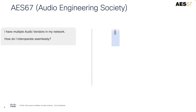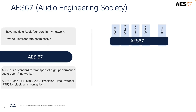One of the challenges customers face today with multi-vendor audio deployments is the capability to seamlessly broadcast audio streams across different vendor endpoints. AES67 provides interoperability between different audio over IP protocols and technologies, allowing various devices and systems from different manufacturers to communicate seamlessly. AES67 is an open standard that defines a set of rules and requirements for transporting audio streams between devices over IP networks, and is particularly relevant in the broadcasting and professional audio industries.